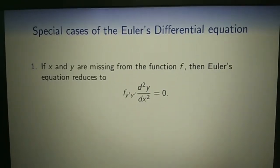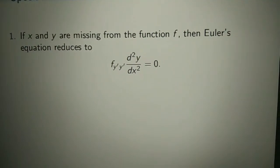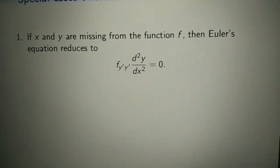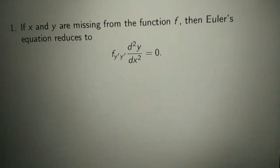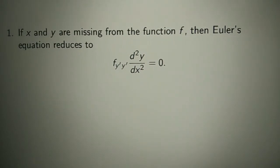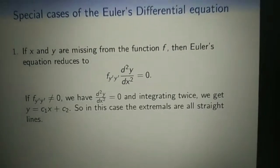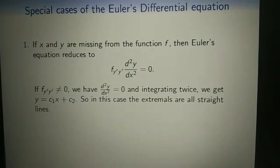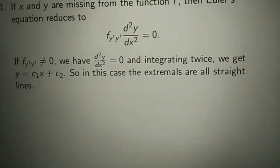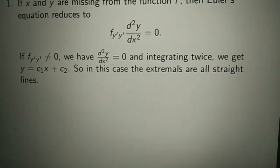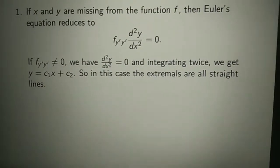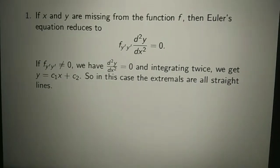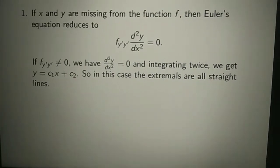Case 1: If x and y are both missing from the function f, then Euler's equation reduces to f_{y'y'} · d²y/dx² equals 0. If f_{y'y'} is not equal to 0, we have d²y/dx² equals 0, and integrating twice we get y equals c₁x plus c₂. So in this case, the extremals are all straight lines.